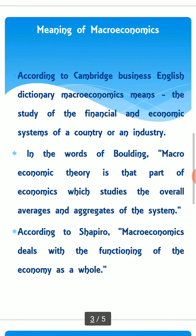Now let us see the different meanings of macroeconomics. According to the Cambridge Business English Dictionary, macroeconomics means the study of the financial and economic systems of a country or an industry. In the words of Professor Balding, macroeconomic theory is that part of economics which studies the overall averages and aggregates of the system. According to Shapiro, macroeconomics deals with the functioning of the economy as a whole.